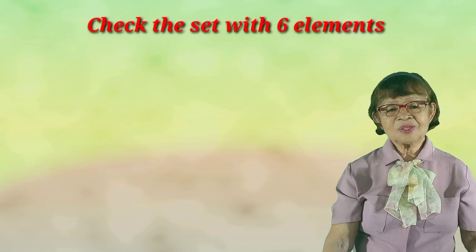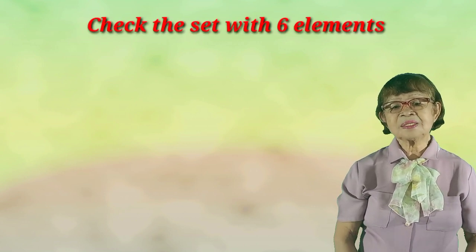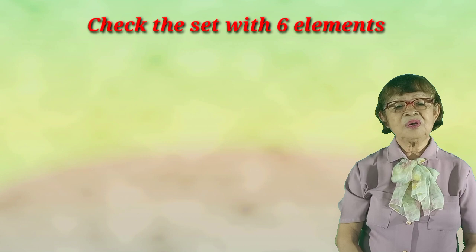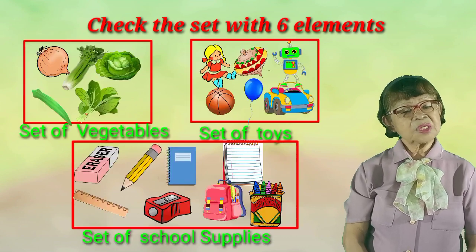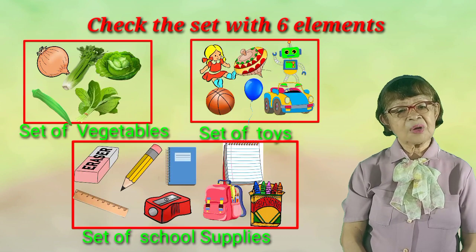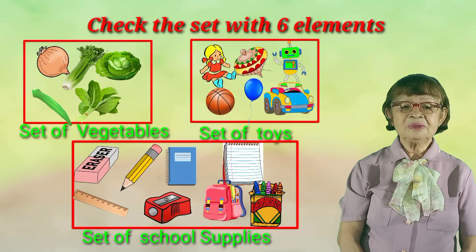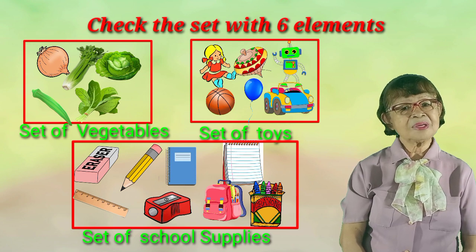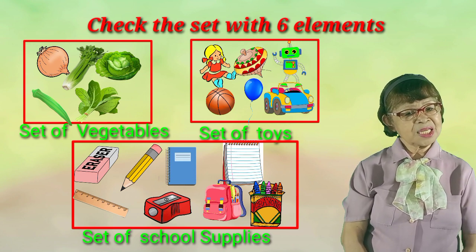Now class, we are going to check the sets of 6 elements. We have here the set of vegetables: 5 vegetables — onion, celery, cabbage, okra, and spinach.